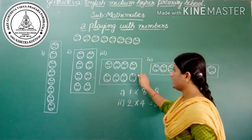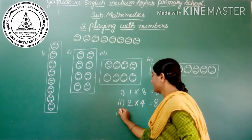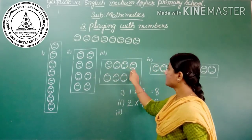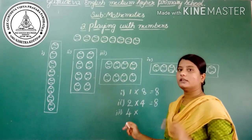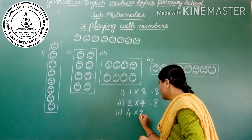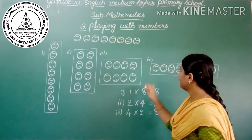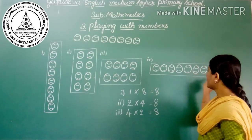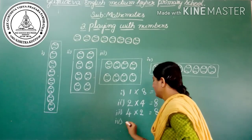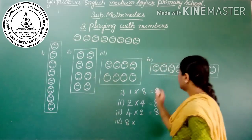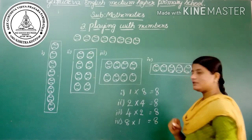Similarly, in the third arrangement, each row has 4 balls. There are 2 rows, which equals 8 balls. And finally, the last arrangement: each row has 8 balls, and the number of rows is only 1, which is equal to 8.